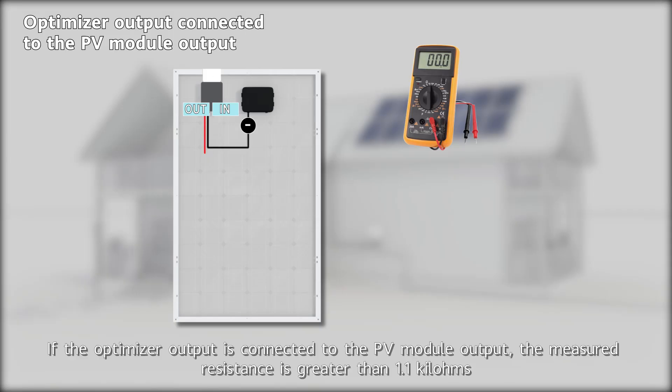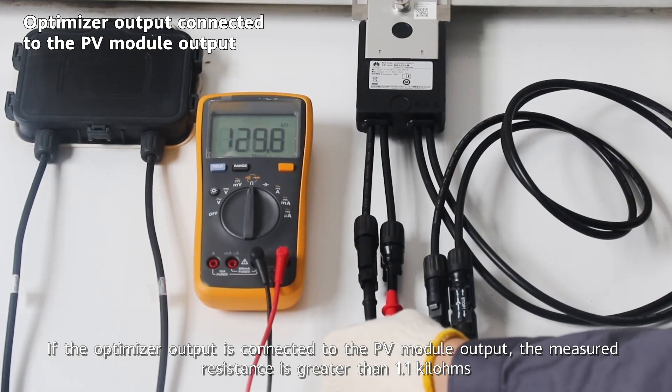If the optimizer output is connected to the PV module output, the measured resistance is greater than 1.1 kilohms.